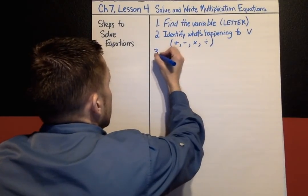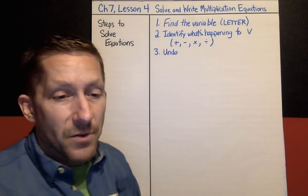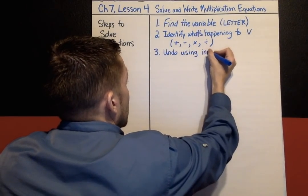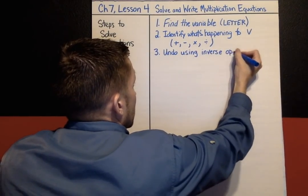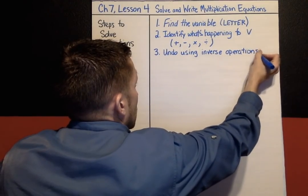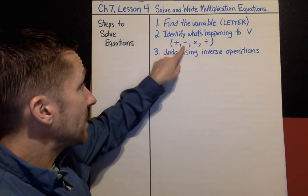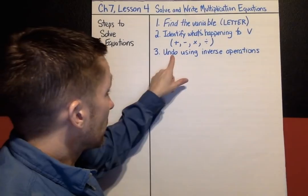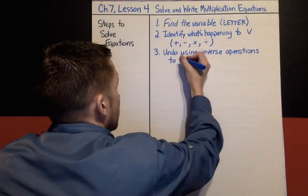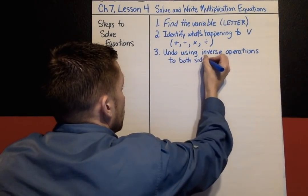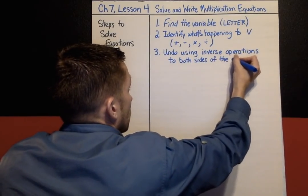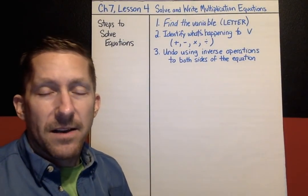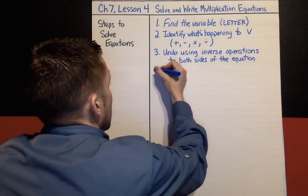Step 3 is the big one. You're going to undo what's happening to the variable using inverse operations. The inverse of adding is subtract, the inverse of subtract is add, the inverse of multiply is divide, and the inverse of divide is multiply. You're going to undo using inverse operations to both sides of the equation. That is really the big part of showing your work — you have to show that the equation remains balanced by doing the same thing to both sides.